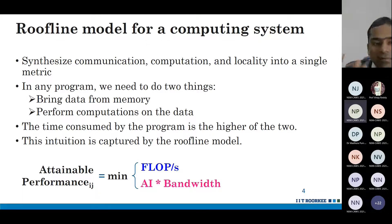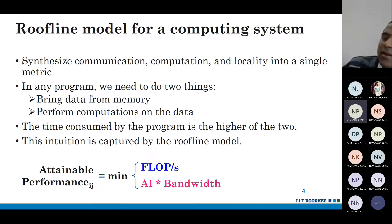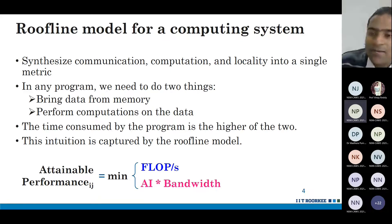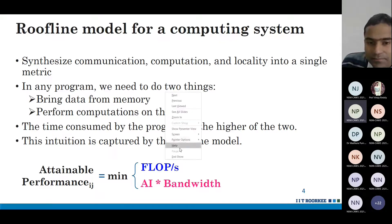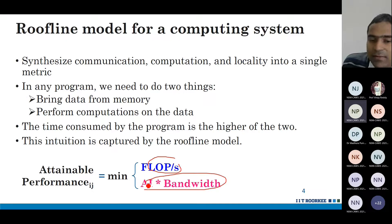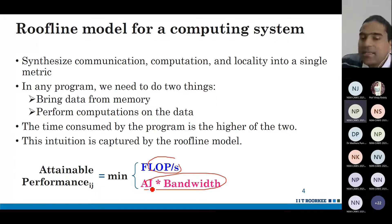The attainable performance is the minimum of two quantities, because even if one factor becomes a bottleneck you can't go past it. It is the minimum of: the peak FLOPS per second of that computing system — determined by the hardware adders and multipliers — and AI times bandwidth, where AI here is arithmetic intensity, not artificial intelligence, and bandwidth is the memory bandwidth.